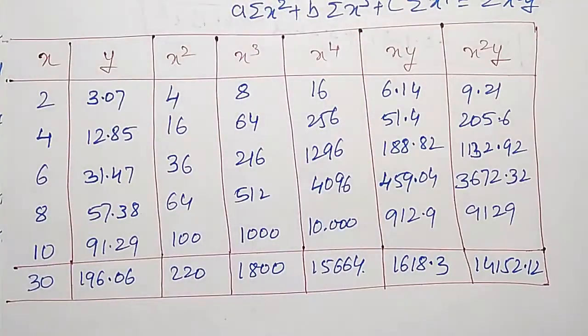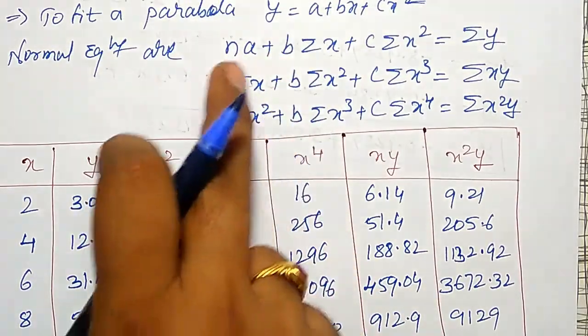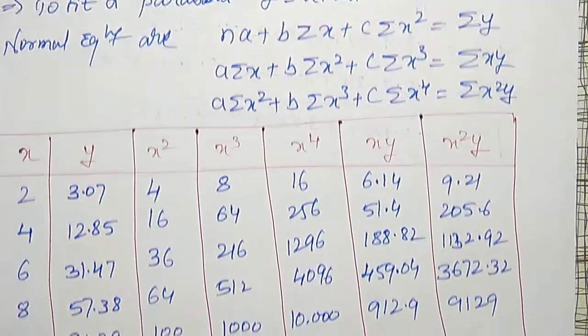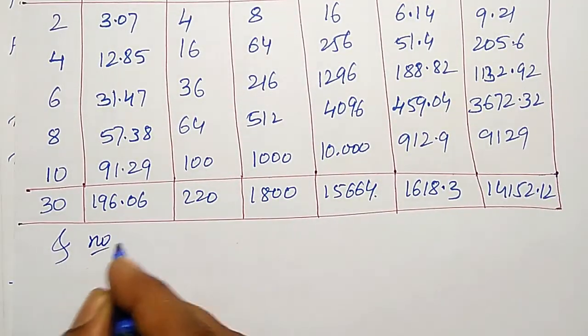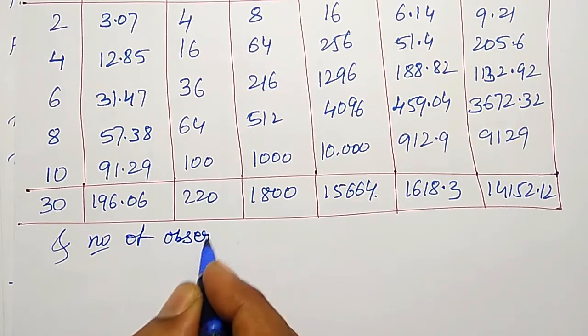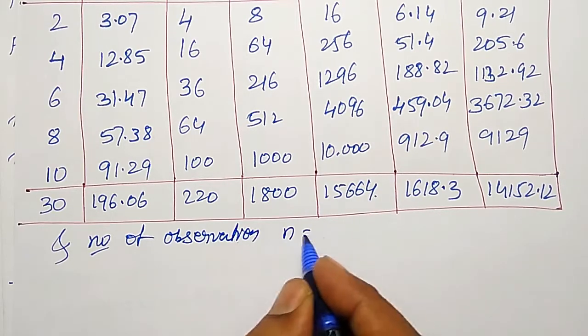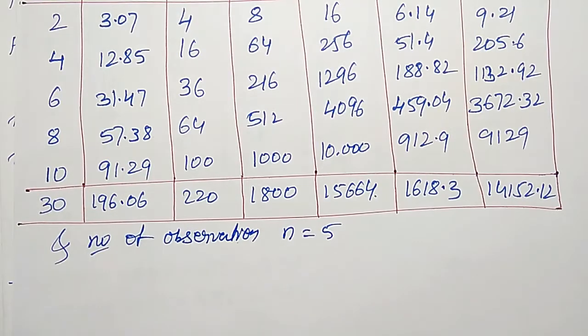Using all these summations in the normal equations and then solving for a, b and c, I have to do. I will substitute in the normal equations. And here, number of observations n is equal to 5. 1, 2, 3, 4, 5. 5 observations are there.